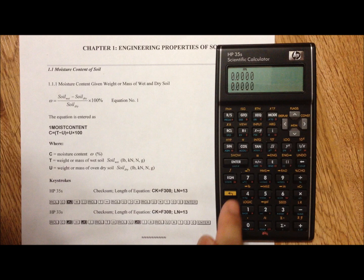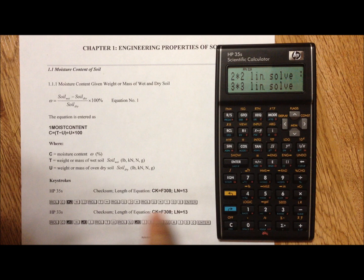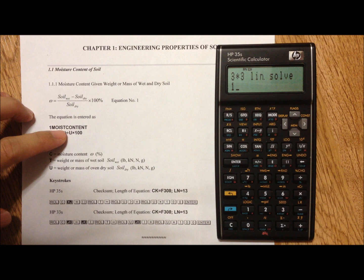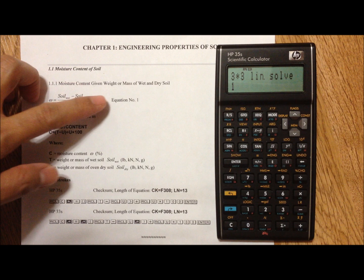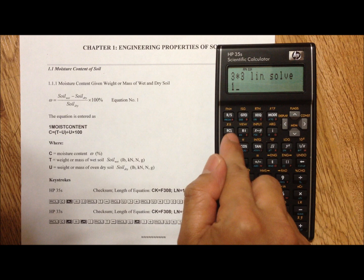We begin by pressing C to turn on the calculator, then equation to go to the equation list. For equation 1, we press 1, followed by a brief description: Moisture Content. That means the equation is solving moisture content given weight or mass of wet and dry soil.